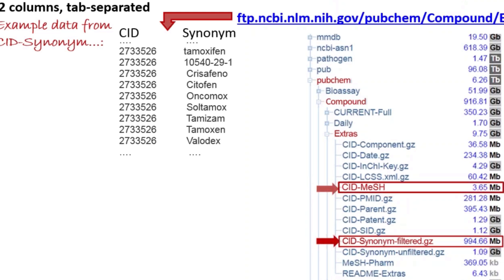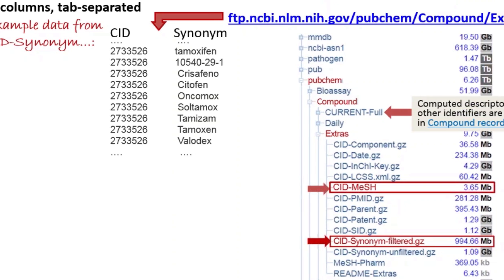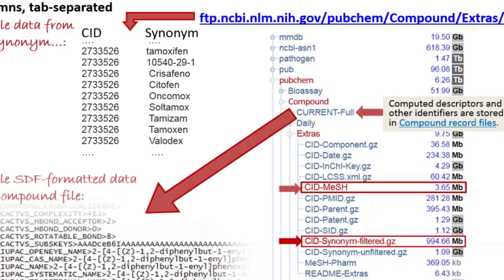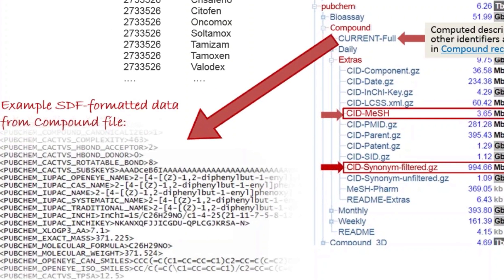For all those other computed descriptors and identifiers, you will need to go to the compound current full record files. They are produced in several formats so you can get whichever is best for you: ASN.1, XML, or SDF. Here's an example of the portion for the tamoxifen data in an SDF formatted file. Embedded in the data are IUPAC names, InChI Key terms, SMILES terms, and lots of other data.